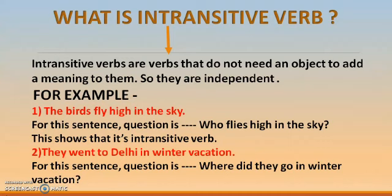For example: 'The birds fly high in the sky.' For this sentence, the question is 'Who flies high in the sky?' — not 'what' or 'whom.' This shows it is an intransitive verb, because an object is not required. Second: 'They went to Delhi in winter vacation.' The question is 'Where did they go?' — again, we are not using 'what' or 'whom,' so these are intransitive verbs.